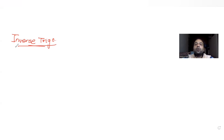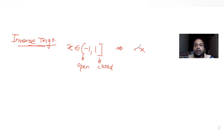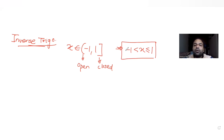The question tells us that x belongs to the interval (-1, 1]. This is an open interval on the left and a closed interval on the right, so x is greater than -1 and less than or equal to 1. x can equal 1, but x cannot equal -1.